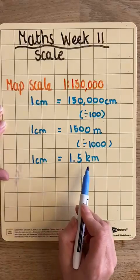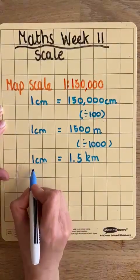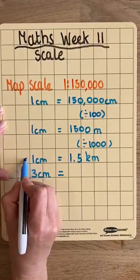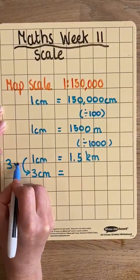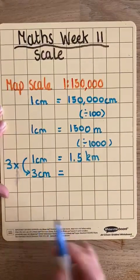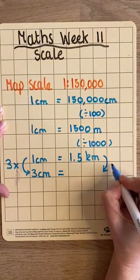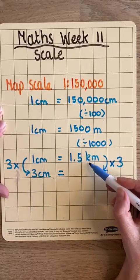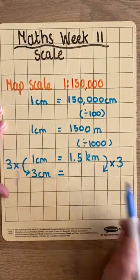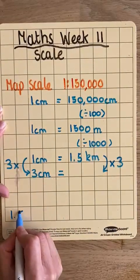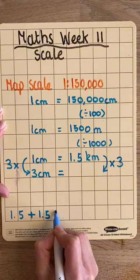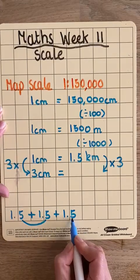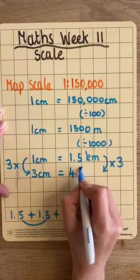So, now that I know that 1 centimetre is 1.5 kilometres, I can find out how much 3 centimetres is in reality. I know that 3 centimetres is 3 times further than 1 centimetre. So, that means that my kilometres will also be 3 times further than 1.5 kilometres. So, in other words, 3 times 1.5 kilometres, or 1.5 add 1.5 add 1.5. 1, 2, 3, 4.5 kilometres.